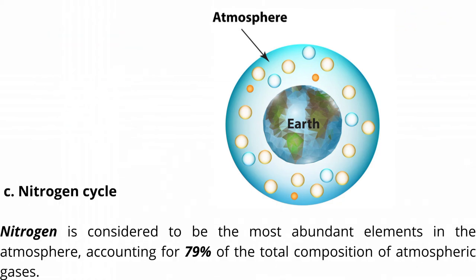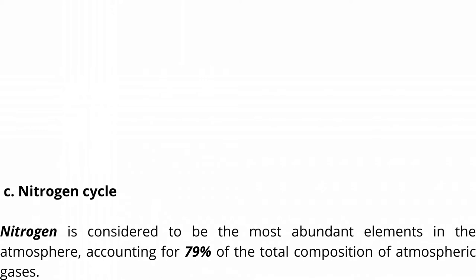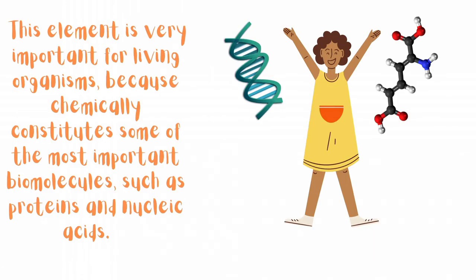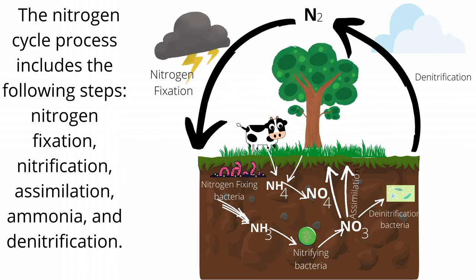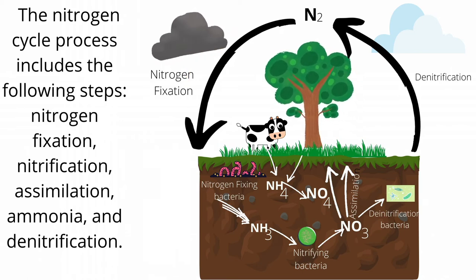Nitrogen cycle. Nitrogen is considered to be the most abundant element in the atmosphere, accounting for 79% of the total composition of atmospheric gases. This element is very important for living organisms, because it chemically constitutes some of the most important biomolecules, such as proteins and nucleic acids. Nitrogen exists in both organic and inorganic forms. Organic nitrogen exists in organisms, passes through the food chain, and is consumed by other organisms. A large amount of nitrogen is found in the atmosphere in inorganic form. This nitrogen is provided to plants by symbiotic bacteria, which can convert inert nitrogen into usable forms such as nitrite and nitrate. The nitrogen cycle process includes the following steps: nitrogen fixation, nitrification, assimilation, ammonification, and denitrification.